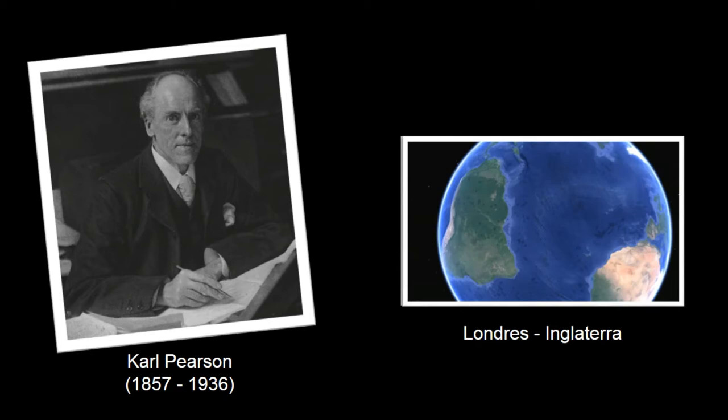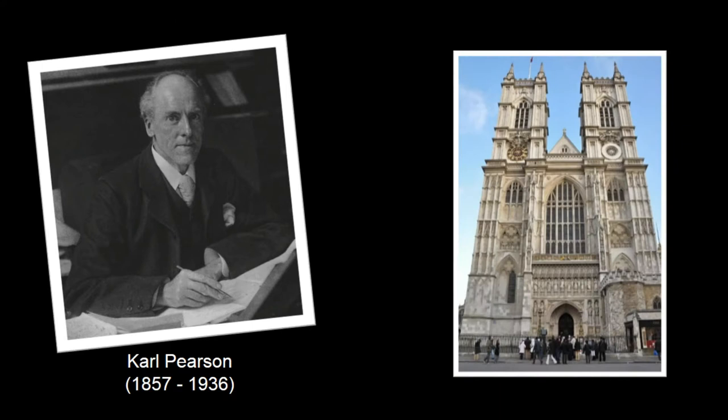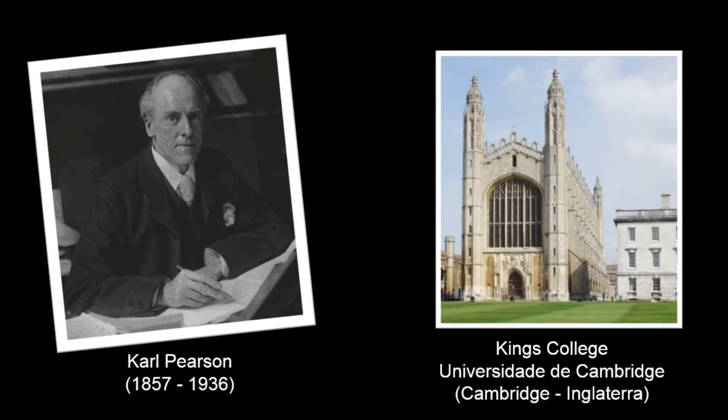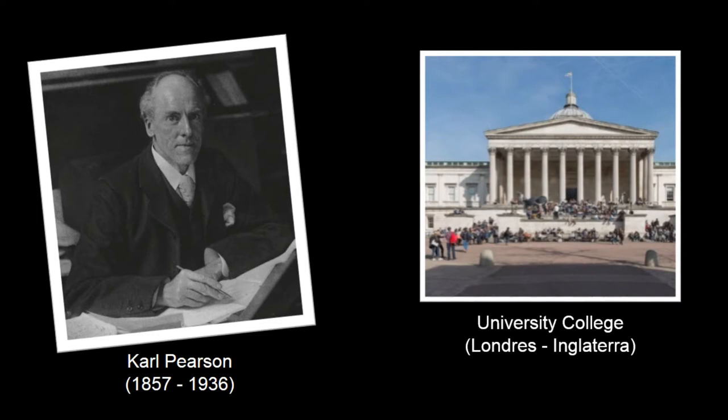Carl Pearson nasceu em Londres e viveu entre os anos de 1857 e 1936. Nasceu numa época em que a Inglaterra, embora bastante empenhada para as ciências naturais, ainda mantinha uma estreita ligação entre a ciência e o dogma cristão. Por volta de seus 24 anos, ganhou uma bolsa para a King's College, na Universidade de Cambridge, onde trabalhou com conhecidos professores de matemática. Em 1884, é nomeado professor de matemática e mecânica aplicada na University College.